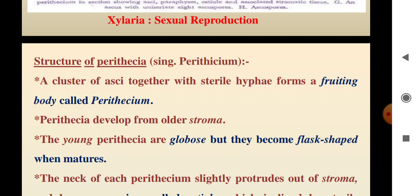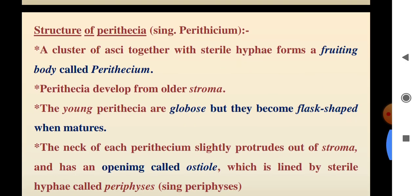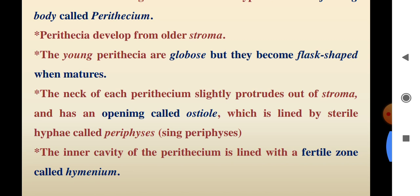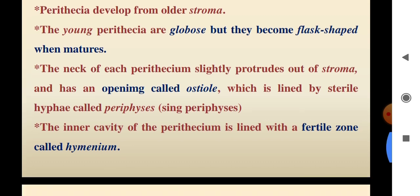It becomes a fruiting body and that fruiting body is called perithecia. Perithecia are developed from older stroma. The young perithecia are globose but they become flask-shaped when mature. The neck of each perithecia slightly protrudes out of the stroma, and the neck has an opening called the ostiole, which is lined by sterile hyphae called periphyses.